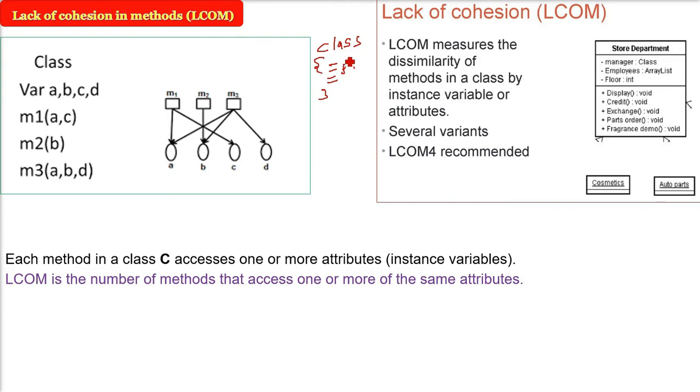So when the method is making use or manipulating or accessing one or more attributes, LCOM is actually defined, which is the number of methods that access one or more of the same attribute. Number of methods that are accessing one or more of the same attribute. For example here variable ABCD is given. The method one is accessing A and C. The method two is accessing B. The method three is accessing A, B and D. This is what I am talking about. Number of methods that access one or more of the same attribute.